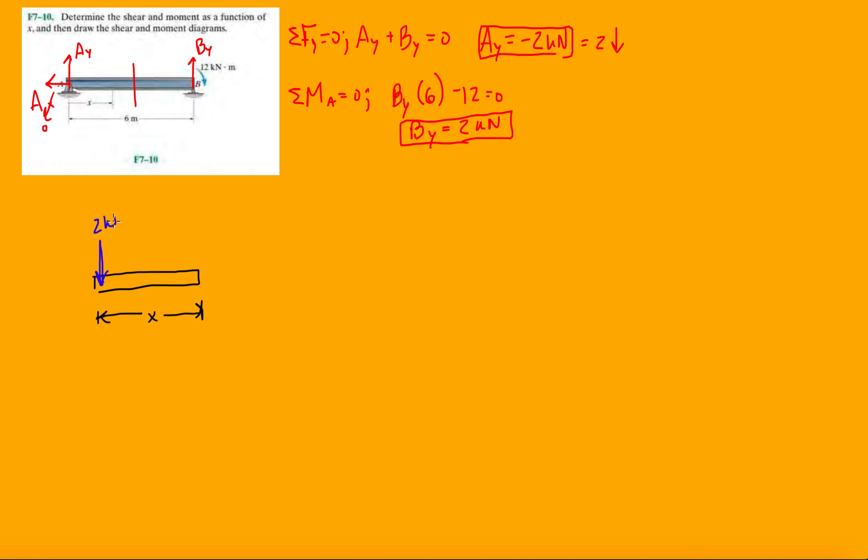So, we know AY is negative, so we know it's going to be 2 kilonewtons down. We don't get to worry about BY because BY corresponds to the right side of this beam. And then we have V1, M1, and N.